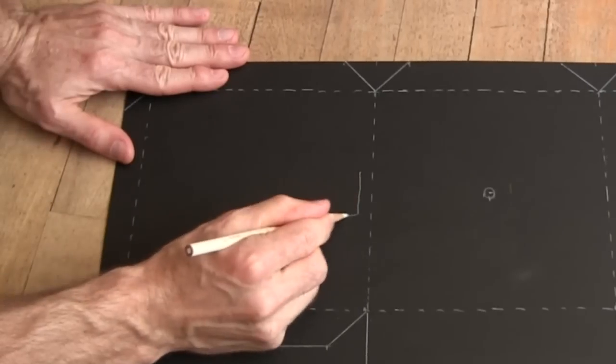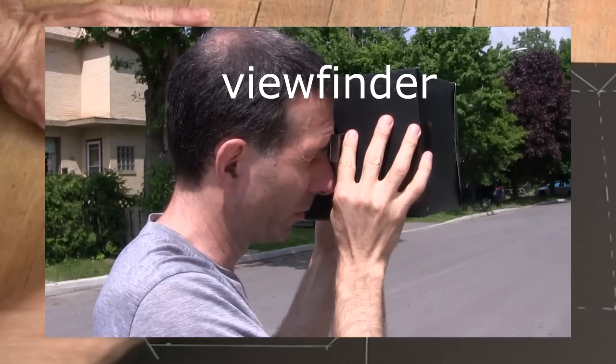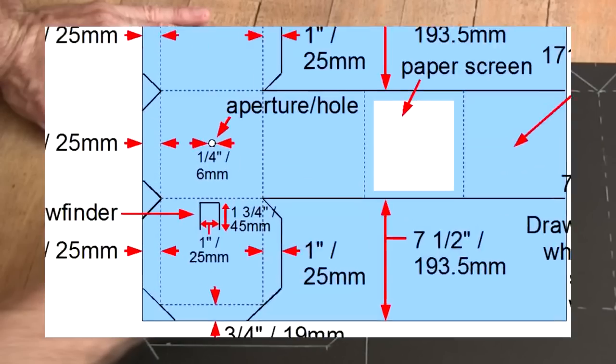Then on the next square over I draw three lines near the fold. They're for the viewing hole or viewfinder to use camera terminology. I make it with roughly these dimensions.